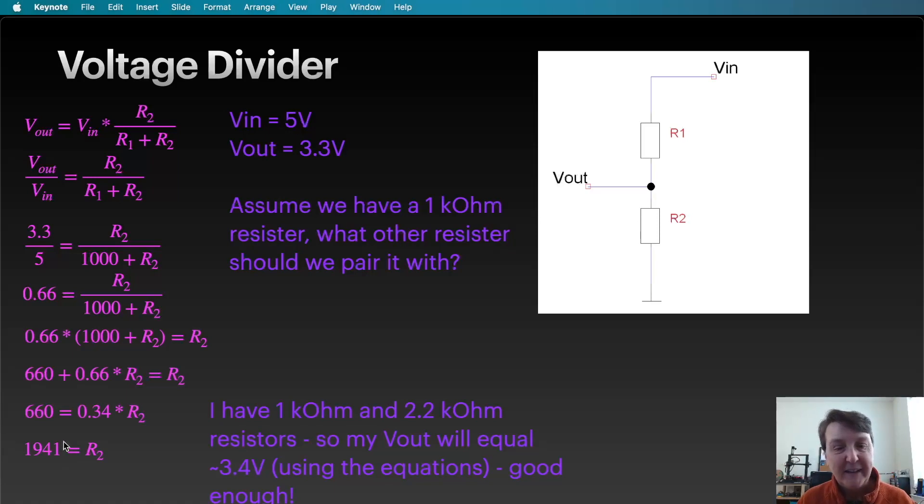There's no resistor exactly like that, but there is a resistor at 2.2K ohm. So I'll take that one. If you run through the equation again with those two values, you'll find that the output voltage should be about 3.4 volts. So that should be fine. That should be good enough. That's what we'll use in our circuit.